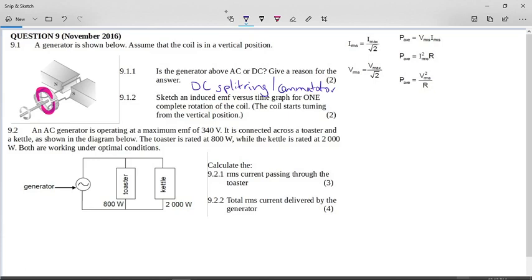Okay, sketch an induced EMF versus time graph for one complete rotation of the coil. The coil starts turning from the vertical position. So if you have a look here, when the coil is vertical, the lines of magnetic lines of force are running like this. And when the coil is vertical, it's not cutting any lines of force, so then we know that the EMF will be at a minimum.